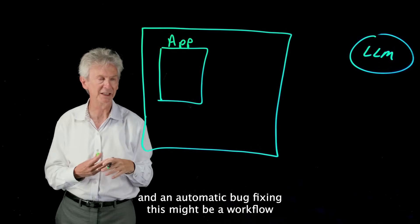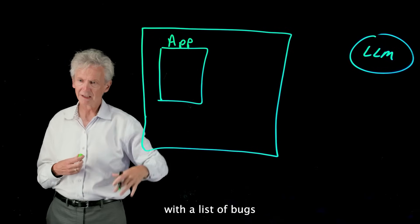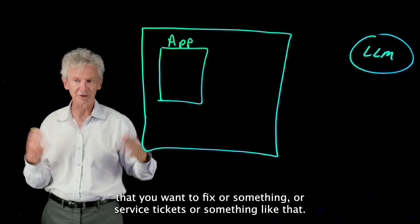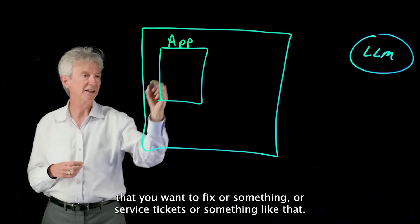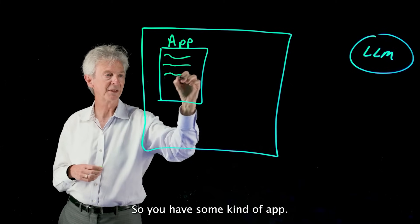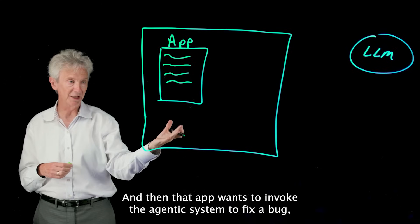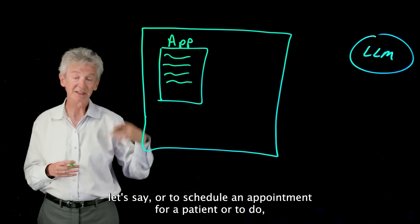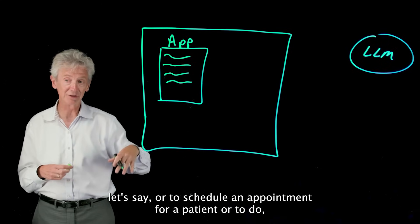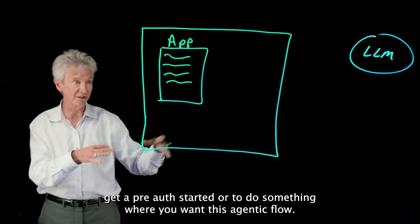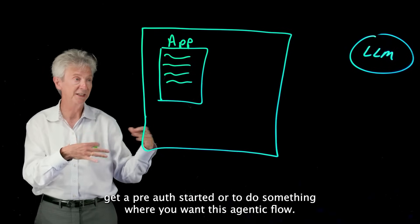In your world you have your app, and in automatic bug fixing this might be a workflow with a list of bugs that you want to fix or something with service tickets. So you have some kind of app and then that app wants to invoke the agentic system to fix a bug, or to schedule an appointment for a patient, or to get a pre-auth started, or to do something where you want this agentic flow.